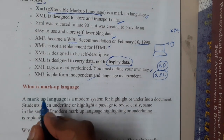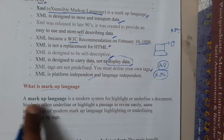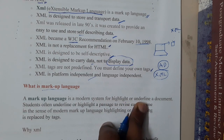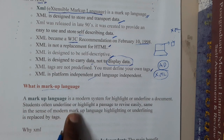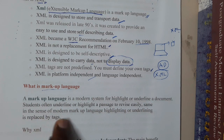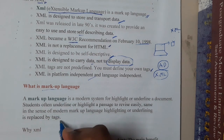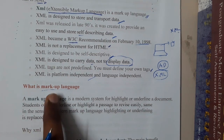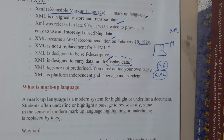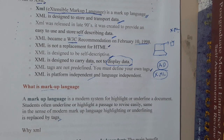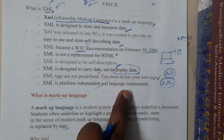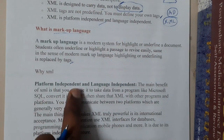A markup language is a modern system for highlighting or annotating a document. Markup languages make highly use of tags. All tags are predefined or user-defined depending on the markup language. XML is platform independent and language independent.